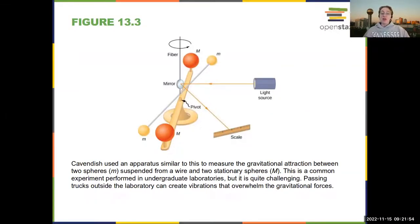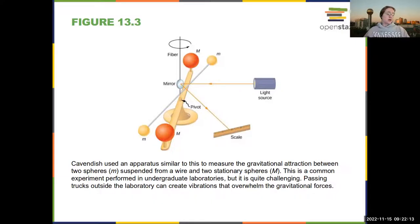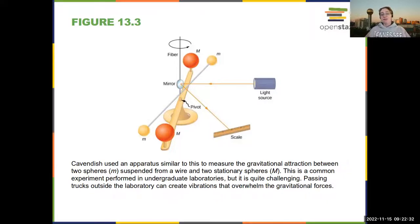Here's an apparatus that you could in principle use to measure the size of the gravitational force. You use two different masses and can actually tell they are going to come closer together because of the gravitational force. You let them get attracted to each other and use a mirror to measure that the masses are actually rotating. This is a very hard measurement to do because the gravitational constant is extremely small, but you can actually measure it.